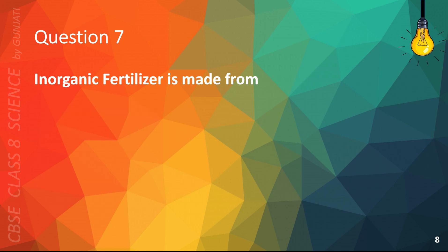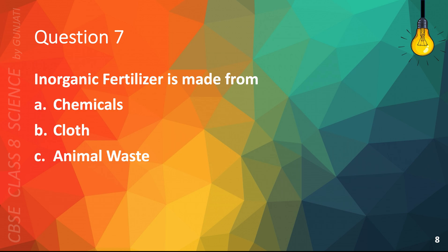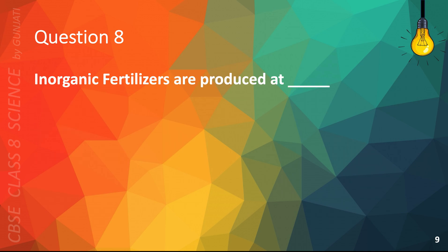Question 7. Inorganic fertilizer is made from: A. Chemicals, B. Cloth, C. Animal Waste, or D. Metal. The correct answer is A. Chemicals.